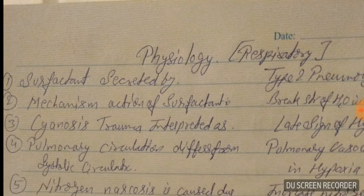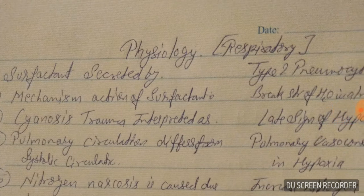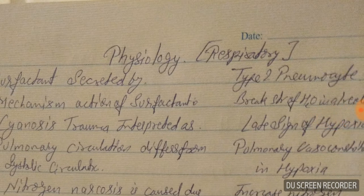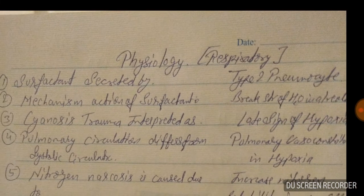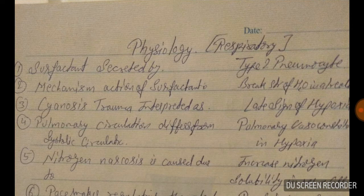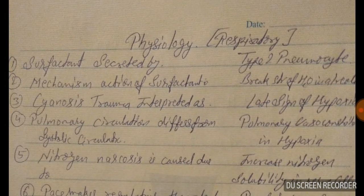Question number one: surfactant is secreted by — it is mainly secreted by the type 2 pneumocyte. Answer to question one: type 2 pneumocyte. Question number two: the mechanism of action of surfactant is to break the structure of water in the alveoli.